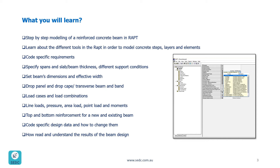You will see how we can set beam dimensions and effective widths as per requirements of the code, and also how to define drop panels and drop caps and what are the differences between these two. I will also explain how to define a transverse beam and what are the differences between band and beam in WRAPT.